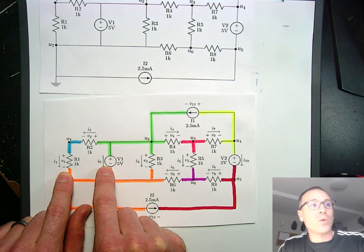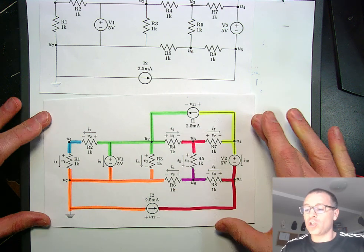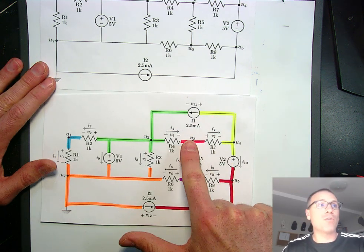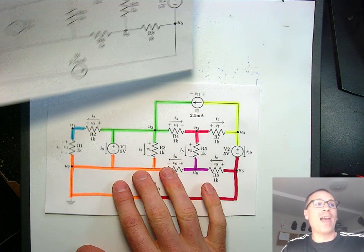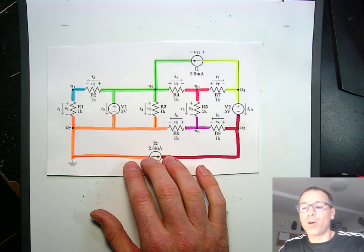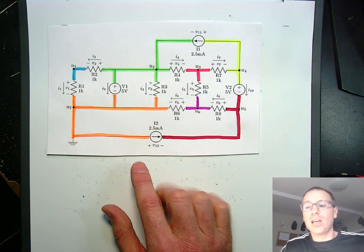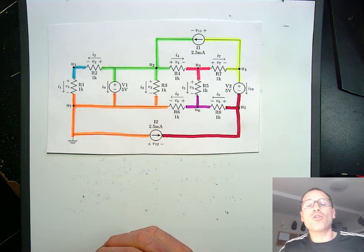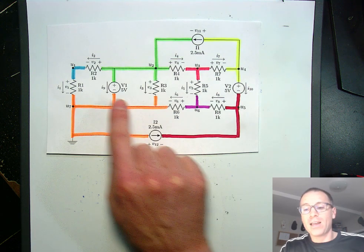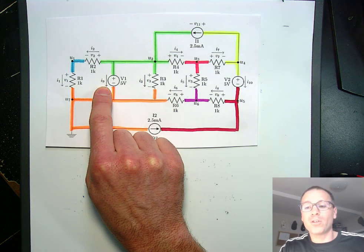The current running through voltage source 1 goes from positive to negative. So from that perspective, we have now labeled every single variable that we can measure and model in this circuit.